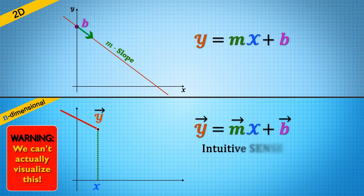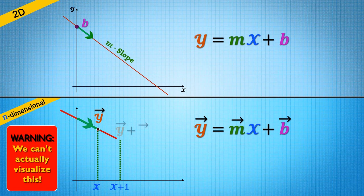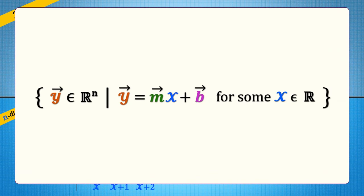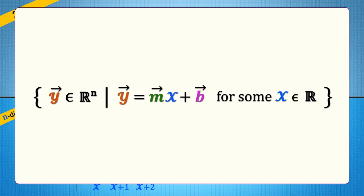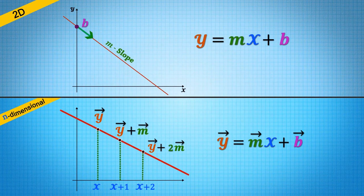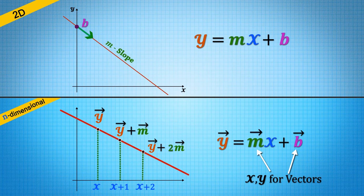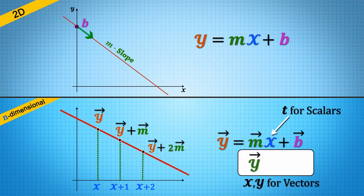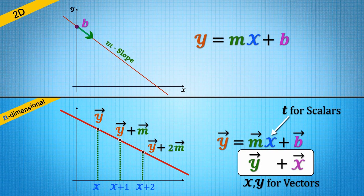This should make intuitive sense. Each unit of x increases vector y by some vector m slope. Moreover, just to be clear, a line is the set of points satisfying this equation. However, we like to reserve x and y for vectors and use t for scalars. So we change variables and use a more common notation.